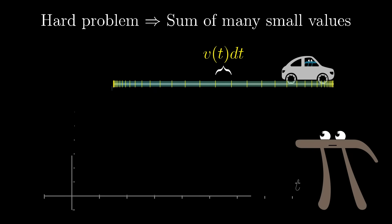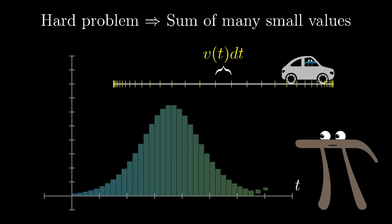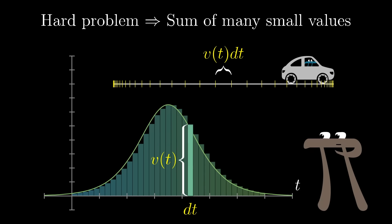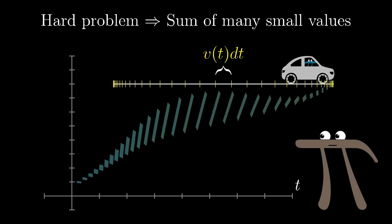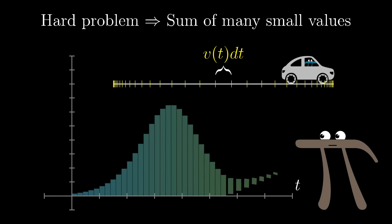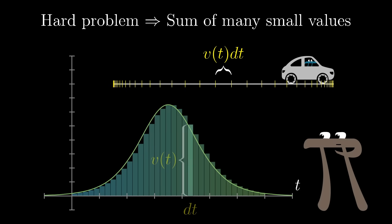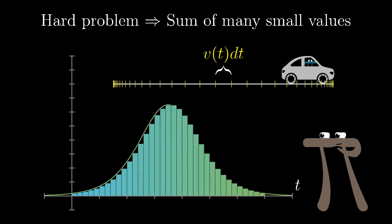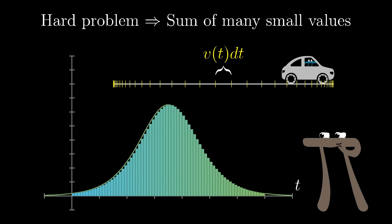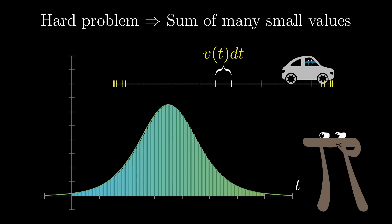I'll talk through the details of examples like this later in the series, but at a high level, many of these types of problems turn out to be equivalent to finding the area under some graph, in much the same way that our circle problem did. This happens whenever the quantities that you're adding up, the one whose sum approximates the original problem, can be thought of as the areas of many thin rectangles sitting side by side like this.